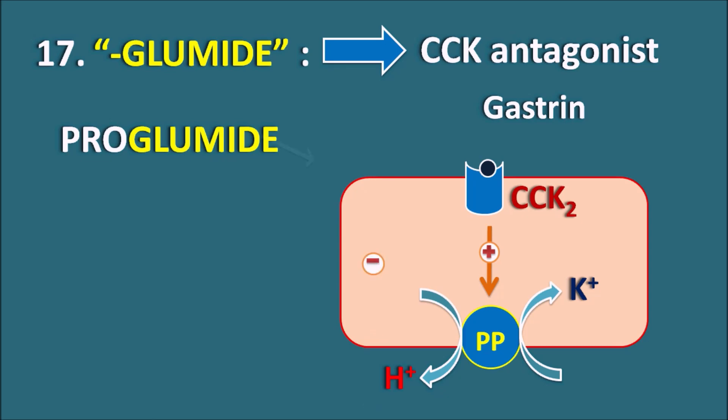Proglumide can block these cholecystokinin receptors, thereby decreasing the action of gastrin and acting as an anti-ulcer drug. However, nowadays we have better anti-ulcer agents like proton pump inhibitors and H2 blockers, so Proglumide is not preferred. Apart from this, Proglumide can also decrease the action of opiates and decrease the tolerance produced by opiates, which is why it can be combined with opiates for long-term treatment in cancer patients.